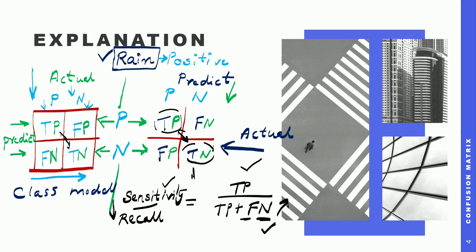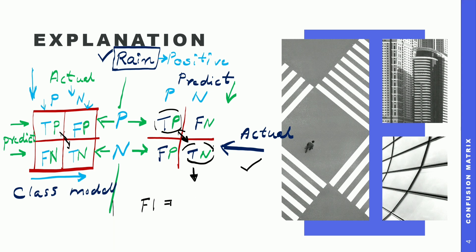We also have the F1 score, which considers both precision and recall together. F1 = 2 × (Precision × Recall) / (Precision + Recall). This gives equal weightage to both precision and recall, meaning our accuracy should be high and precision and recall should both be balanced. A high F1 score means we are not giving exclusive priority to only precision or only recall.